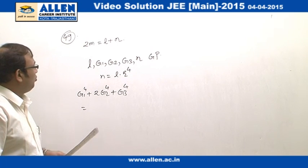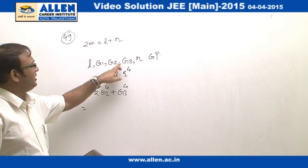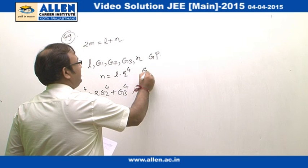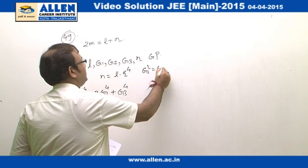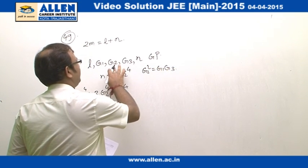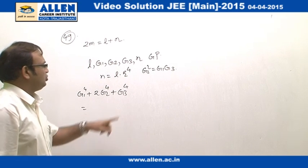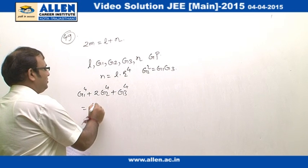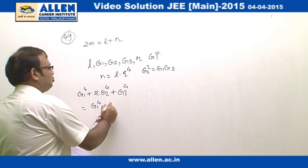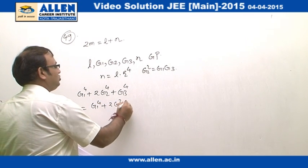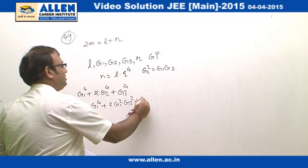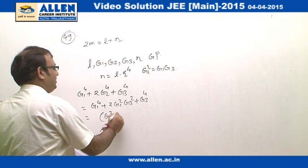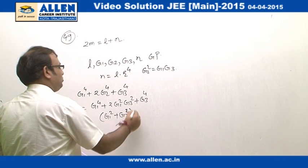So how we can start the problem is, we see that G1, G2 and G3 are also in GP. So we can also write that G2 square is equal to G1, G3 as G2 is going to be the geometric mean of G1 and G3. So G2 power 4 will be G1 square, G3 square. We will put it over here. So we get G1 power 4 plus 2 times G1 square, G3 square plus G3 power 4. And that is nothing but G1 square plus G3 square whole square.